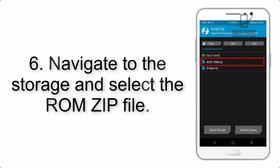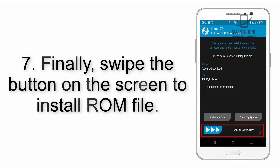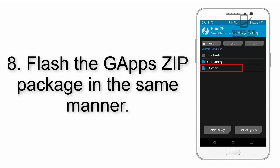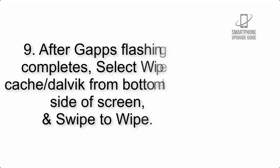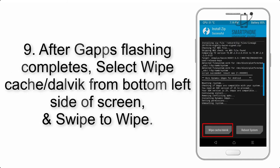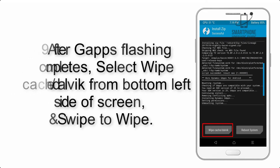Step 5: Go back to the recovery main screen and tap on the Install button. Step 6: Navigate to the storage and select the ROM zip file. Step 7: Swipe the button on the screen to install the ROM file. Step 8: Flash the GApps zip package in the same manner.